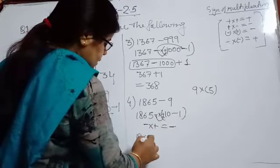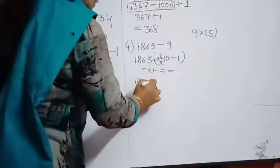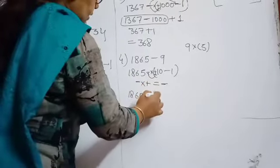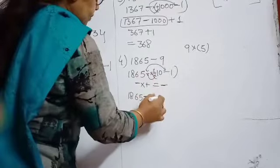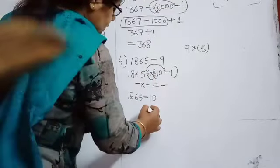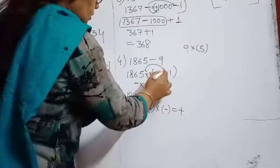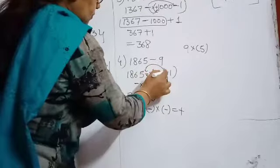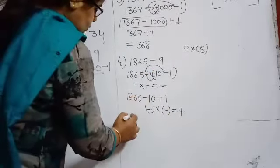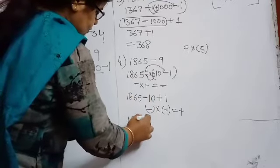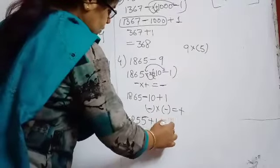So for 1865, we decided both signs: minus into plus equals minus, so 1865 minus 10. For the second number, minus into minus equals plus, so the sign before 1 becomes plus. Now 1865 minus 10 equals 1855, and 1855 plus 1 equals 1856.